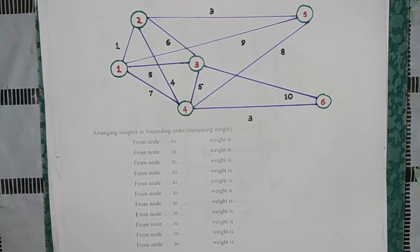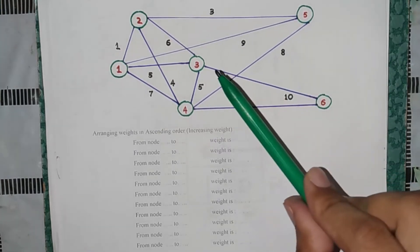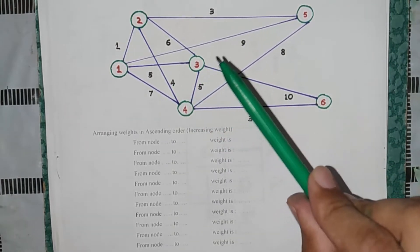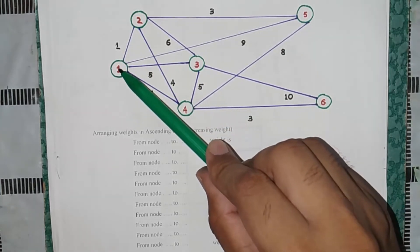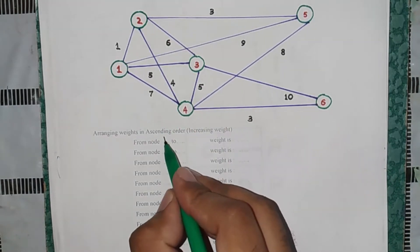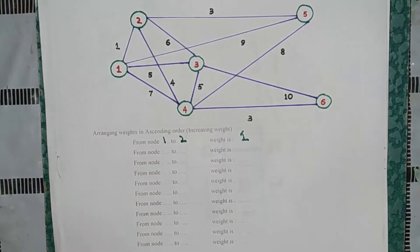In Kruskal's method, you have so many arcs that you have to look at. You can see that the most low weight is 1, and this is from node 1 to node 2. So we have here node 1 to node 2, weight is 1.